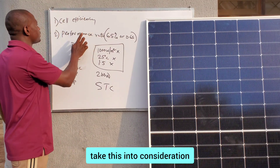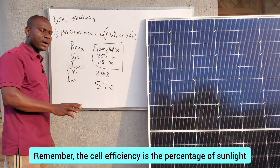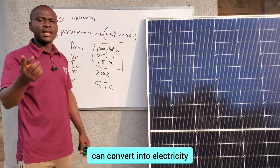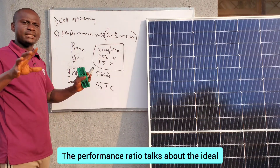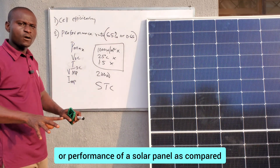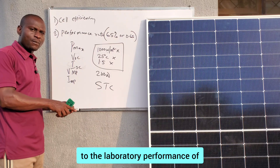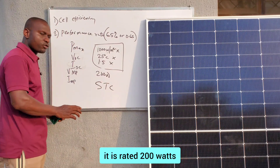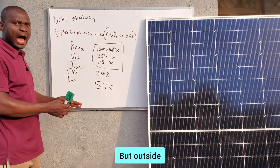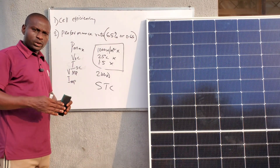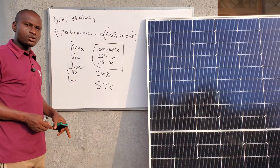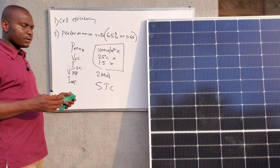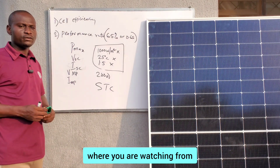So at all times, when sizing your solar panel, take this into consideration: cell efficiency and performance ratio. Remember, cell efficiency is the percentage of sunlight that the solar cells can convert into electricity. The performance ratio describes the real-world performance of a solar panel compared to its laboratory performance. Size your panel appropriately to give you the desired amount of energy you need to run your loads. Thank you for watching — let me know where you are watching from. Remain blessed.